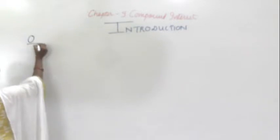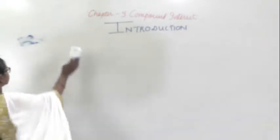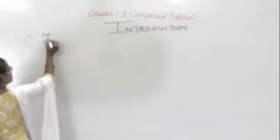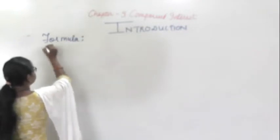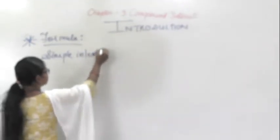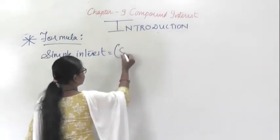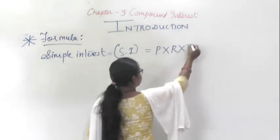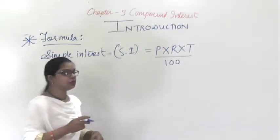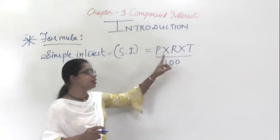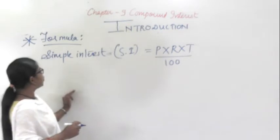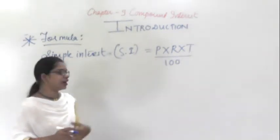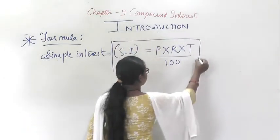Now we are going to study the formulas which are going to be used in this chapter. The formula for Simple Interest is: SI = (P × R × T) / 100, where P is the Principal, R is the Rate, and T is the Time Period.